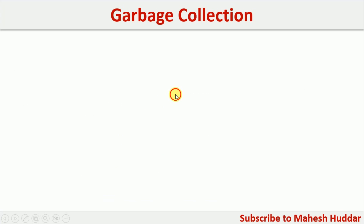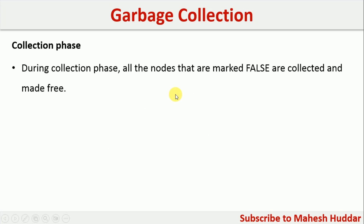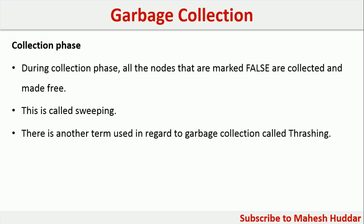In the collection phase, all nodes or objects which were marked as false in the marking phase will be removed. This is what is called sweeping, or it is also called thrashing sometimes. The objects marked as false — that is, the objects which are not accessible — will be removed from the system so that we get free space and can create new objects.